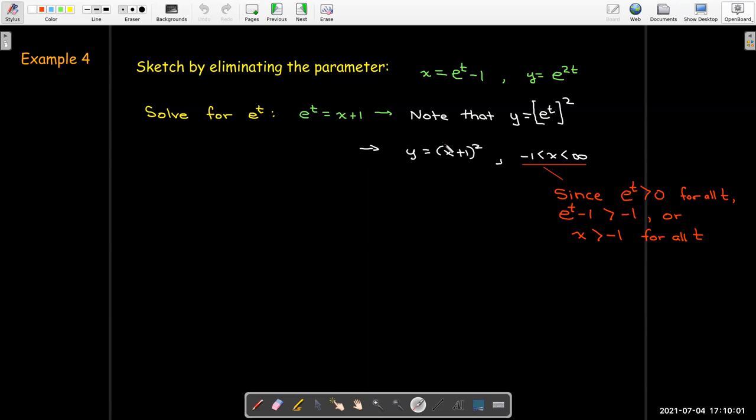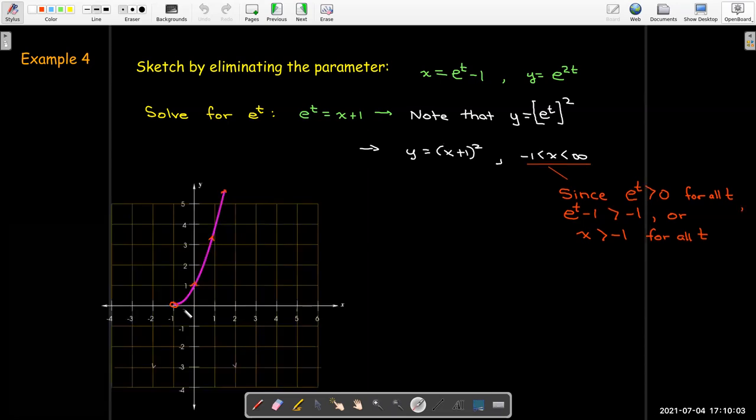Which means that I don't get the full graph of the parabola. I only get half. Not even half because I don't get the vertex. The vertex occurs when y equals 0. And that's at x equals negative 1. And x can never equal negative 1. So I have a little open circle there to indicate that that point is left out. But I do get the other half of the parabola there.